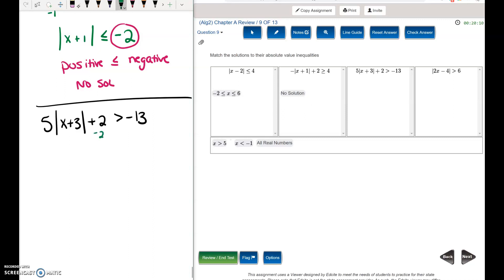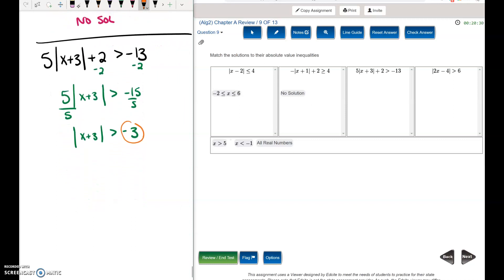So our first step is subtract 2 on both sides and then divide by 5. All right, warning: absolute value and a negative. The left side, the absolute value will give you a positive number. Negative 3 is a negative number. Is a positive number bigger than a negative number? Yes, always. So that one is all real numbers.